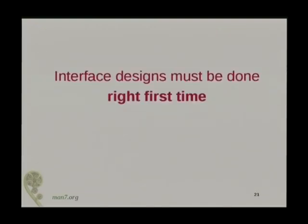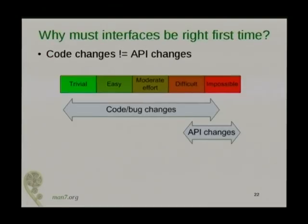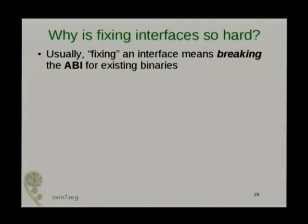Interface designs pretty much have to be done right the first time — there's not a concept of getting things right in the end. It's easy to change code, but it's hard to change APIs. If you put changes on a scale from easy to impossible, code changes fall anywhere along that spectrum, but API changes tend to fall much further toward the impossible end. If you change an API, that usually means breaking programs that already exist out there in user space. It's often very hard to change an API in a way that adds new behavior without breaking existing user space programs that already depend on a certain behavior.